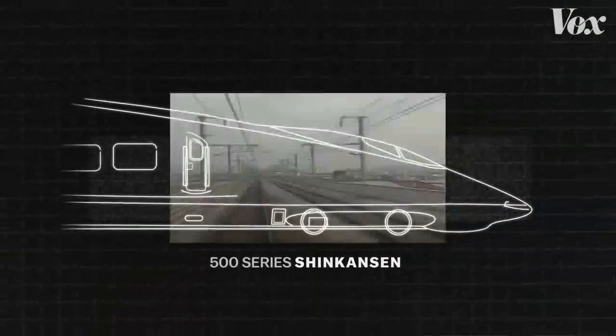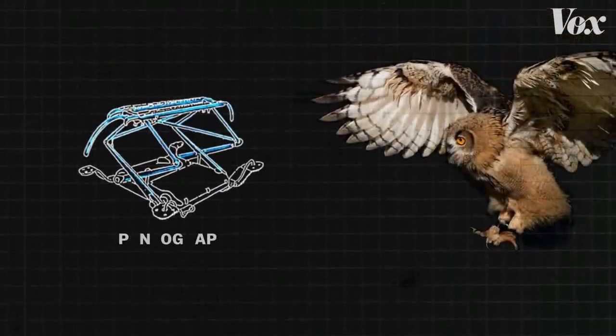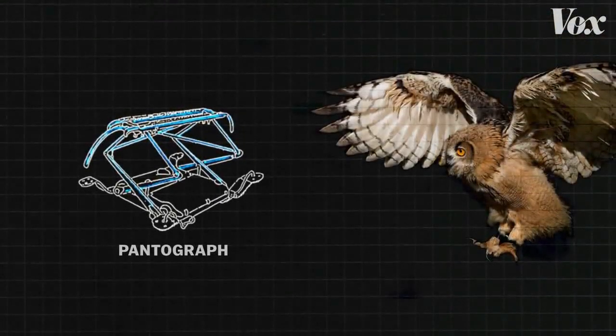Different components of the redesigned bullet train were based on different birds. Owls inspired the pantograph, that's the rig that connects the train to the electric wires above.